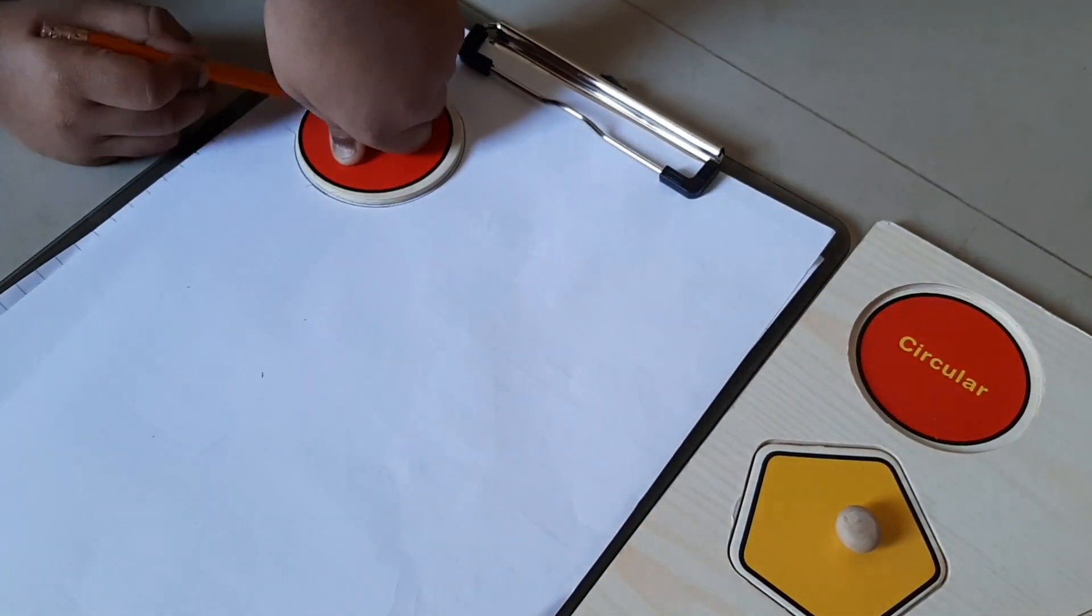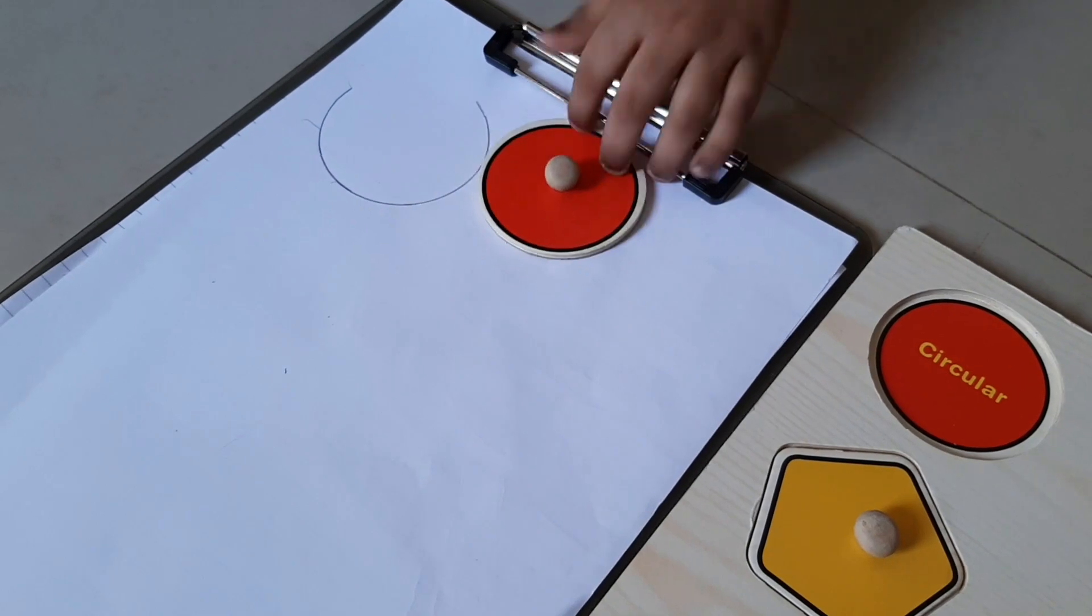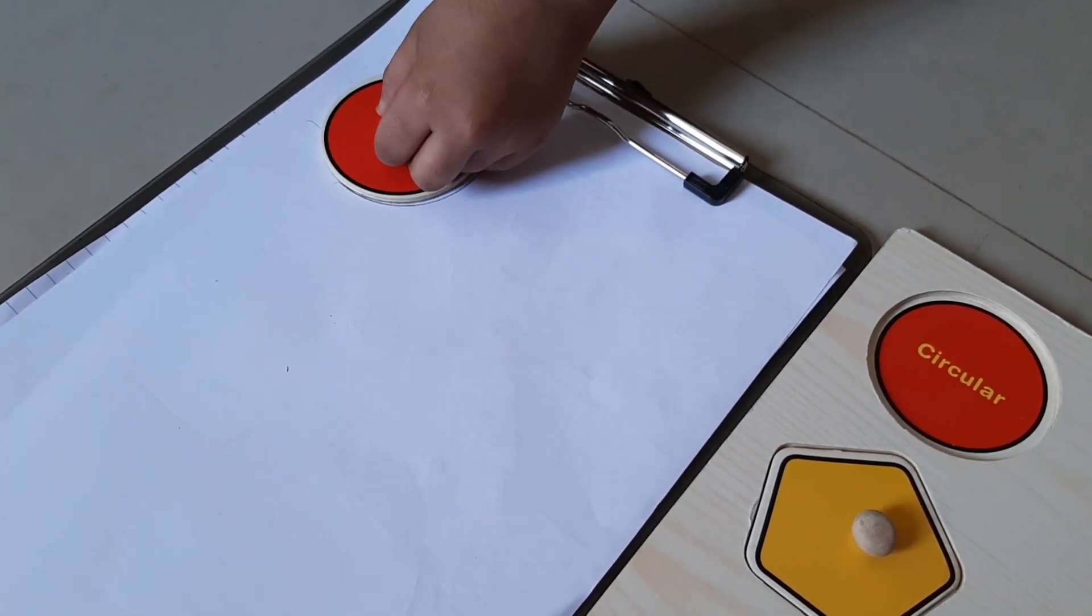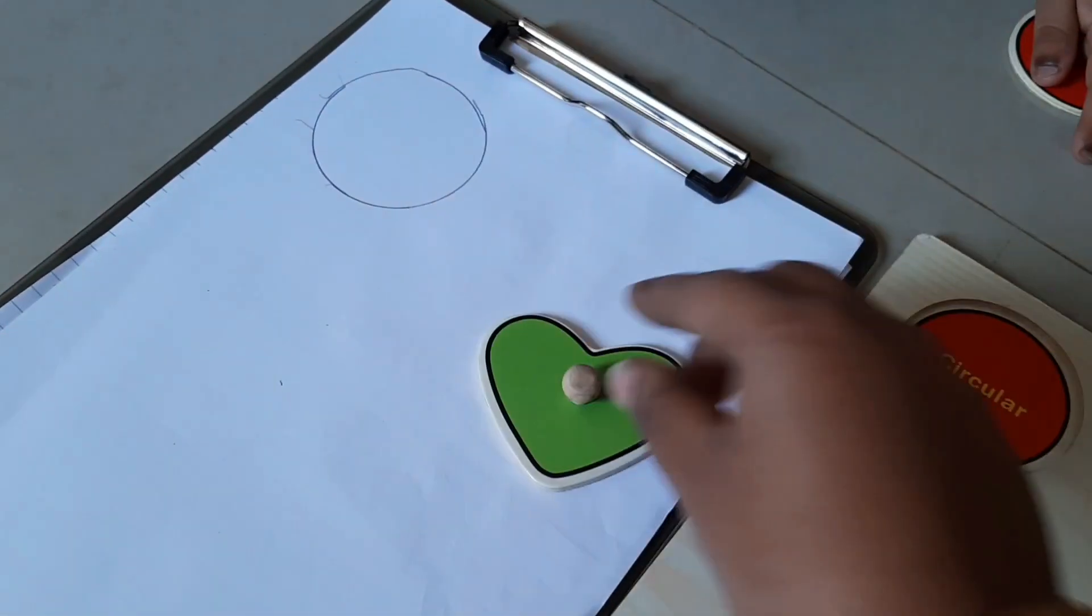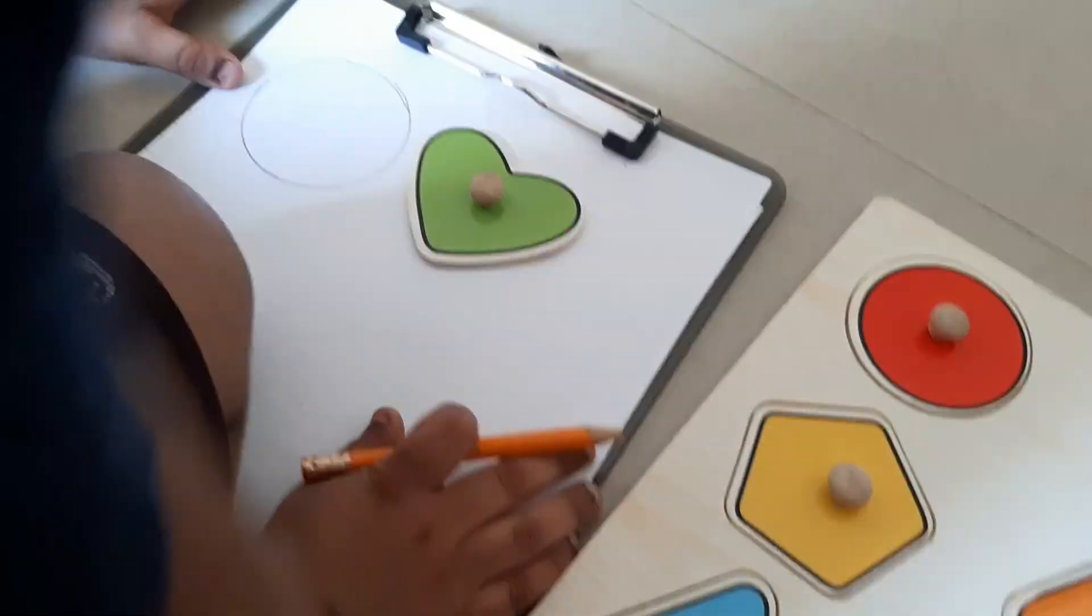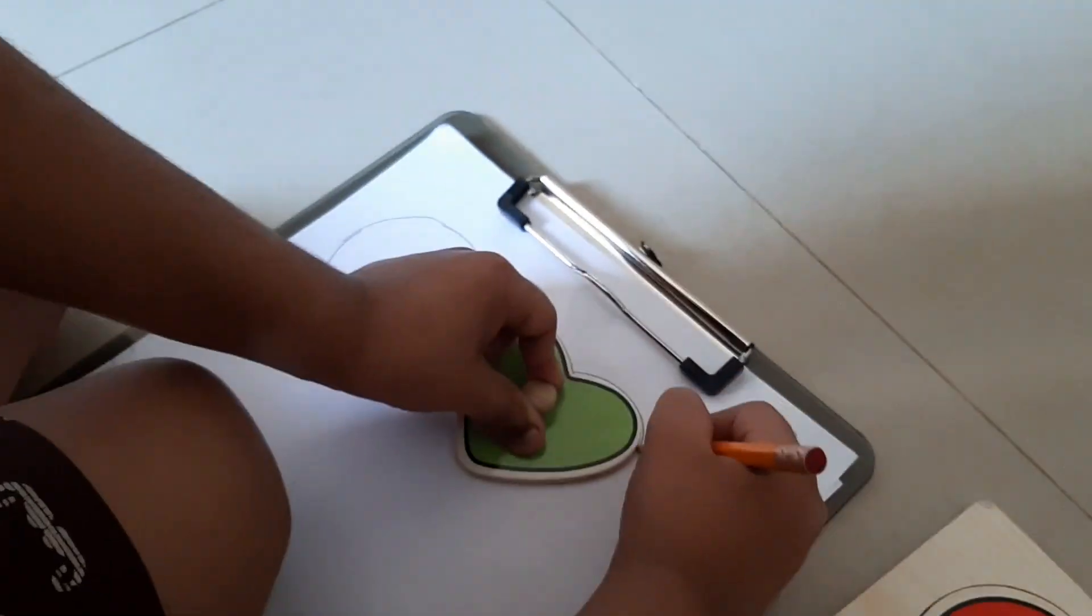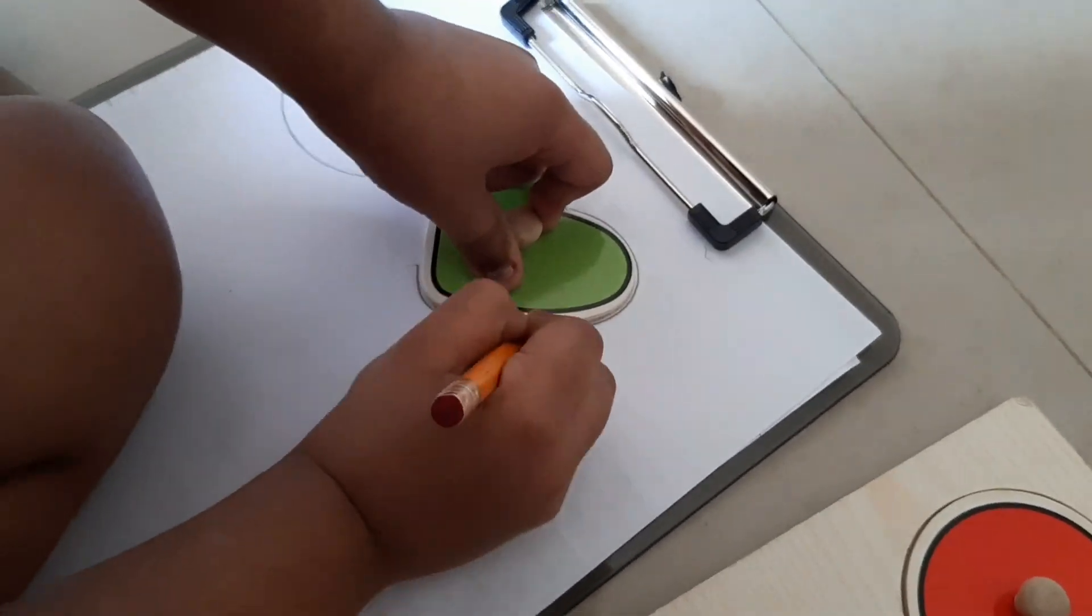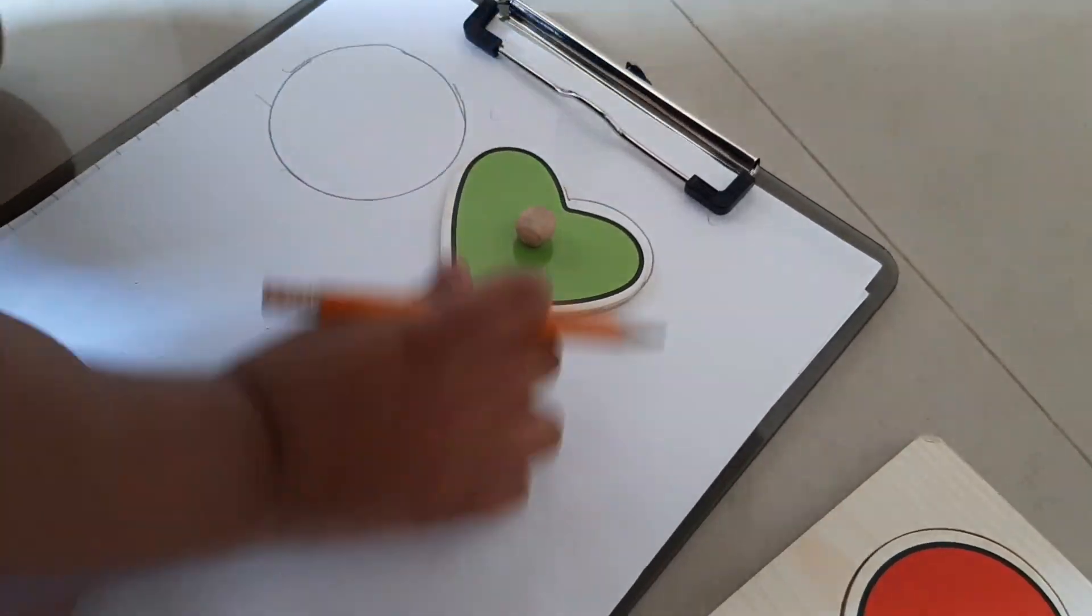And also they can use it to draw the shapes with the help of each shape piece. They can enjoy taking traces of each shape. By doing so they can very much enjoy tracing. It's fun too.